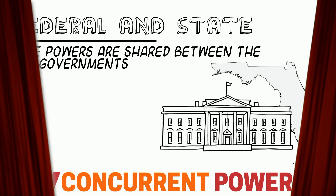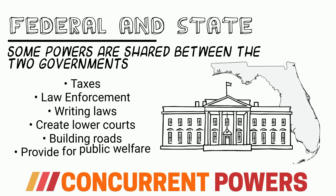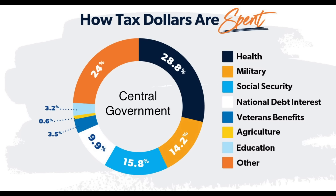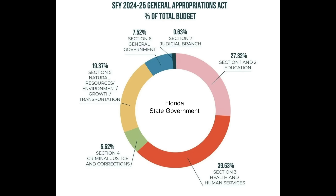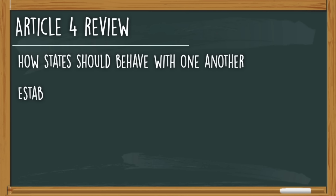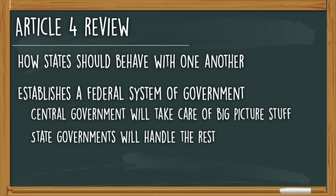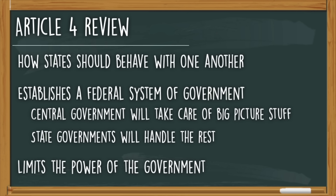There's really only one other thing to mention about Article 4, and that's the fact that the central and state governments can also share a power. These shared powers are known as concurrent powers. The best example of a concurrent power would be the power to tax — this is not a power that solely belongs to the central government or solely to the state government. Both governments need to do this in order to fund their responsibilities. Article 4 sets out to explain how states should behave with one another, establishes a federal system, and by doing so reinforces the concept of limited government.